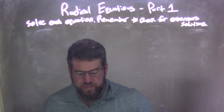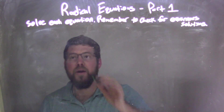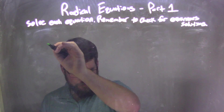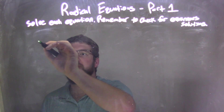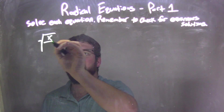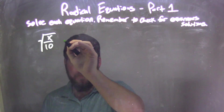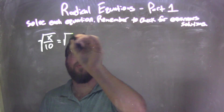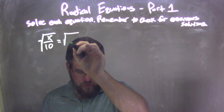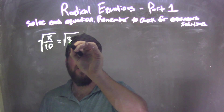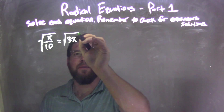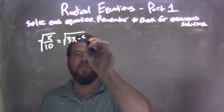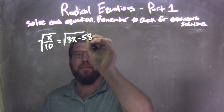So, if I was given this equation: the square root of x over 10 equals the square root of 3x minus 58.